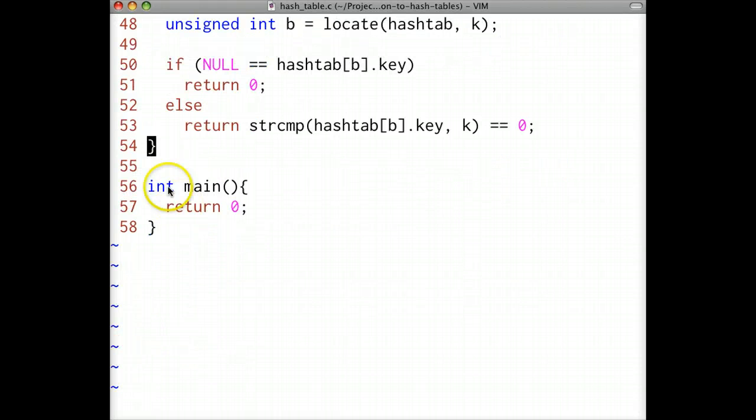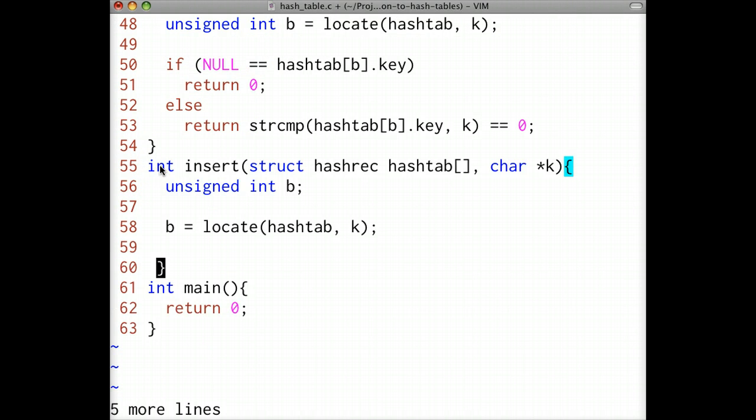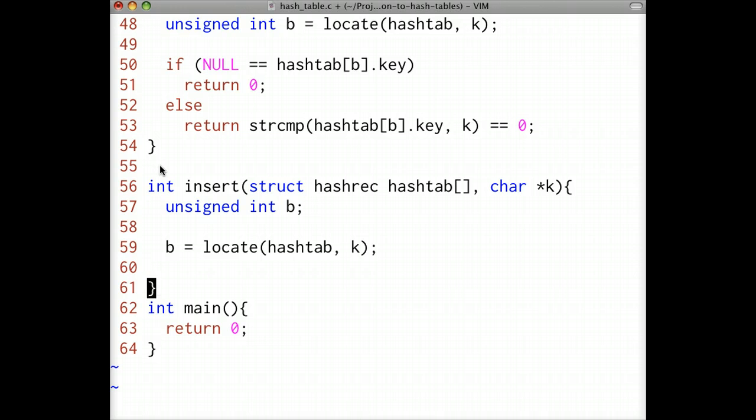Next, we'll implement the insertion function. To insert a new record into the hash table, we'll need the address of the first empty bucket. Luckily, our locate function returns just that.